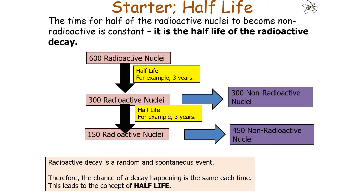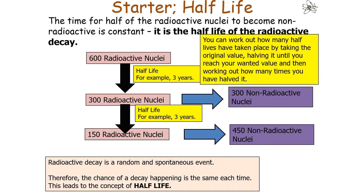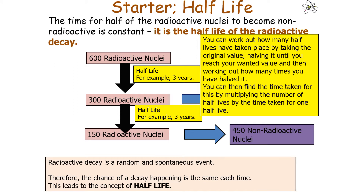For example, if the half-life is three years to go from 600 to 300, it will also be three years to go from 300 to 150. You can work out how many half-lives have taken place by taking the original value, halving it until you reach your desired value, then counting how many times you halved. You then find the total time by multiplying the number of half-lives by the time for one half-life.